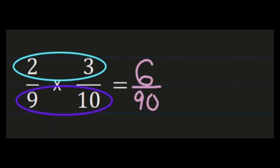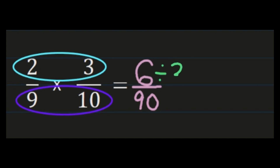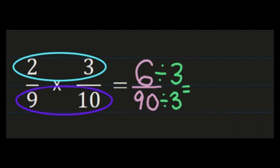I don't have an improper fraction so I don't need to turn it into a mixed number. But I do need to consider simplifying. I notice that my numerator and denominator share a common factor of 3. So I'm going to start with 6 divided by 3, which is 2. And 90 divided by 3 is 30.